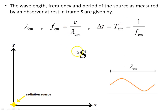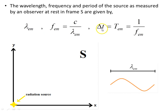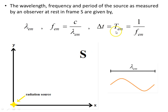Coming back to frame S, the wavelength, frequency, and period of the source as measured by an observer at rest in frame S are given by lambda emitted, frequency emitted which is C over lambda emitted, and the period for a single wavelength is 1 over the frequency. In frame S, the time taken for one complete cycle — one complete wavelength to be emitted — is delta T, the period of the wave.